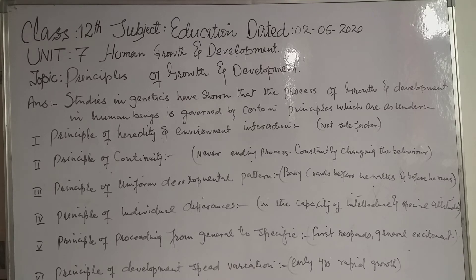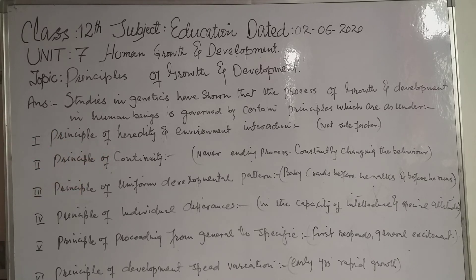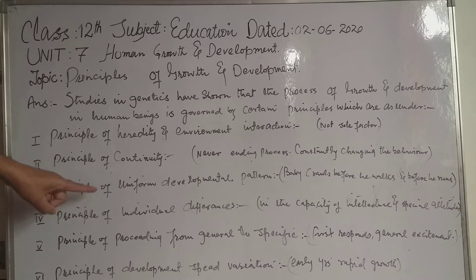The child develops by using hereditary traits and interacting with his environment in biologically determined ways. Neither heredity nor environment is the sole factor in growth and development. Number two: the principle of continuity. The process of development continues from birth to death in some or other form and is a never-ending process.